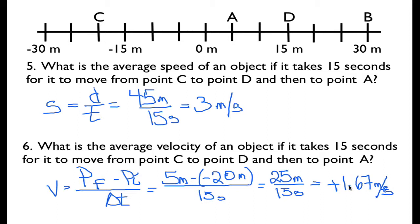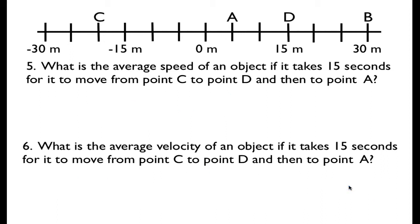Try to remember the equations: distance divided by time for speed, and for velocity it's position final minus position initial — that's all you care about. You don't care if the object ran back and forth 20 times. All you care about is where it started and where it ended, divided by the total time. Hopefully that was helpful, and we'll see you next time. Thank you very much.